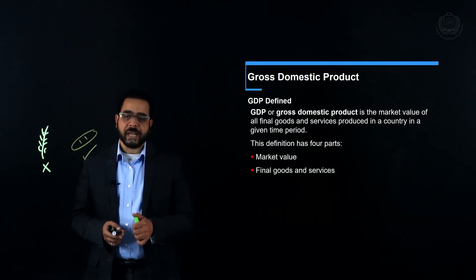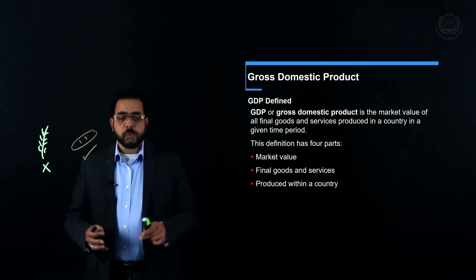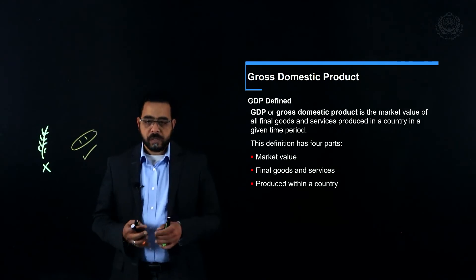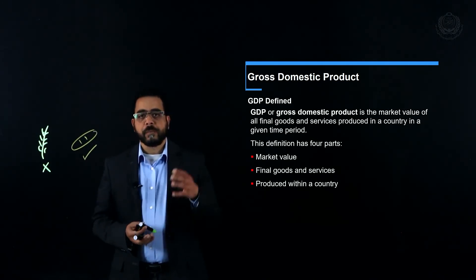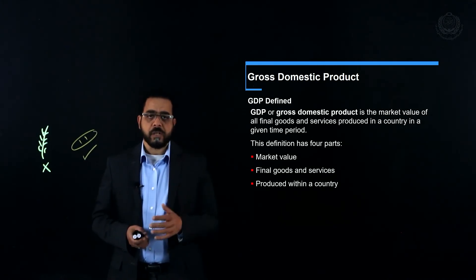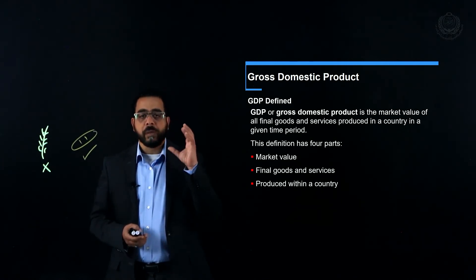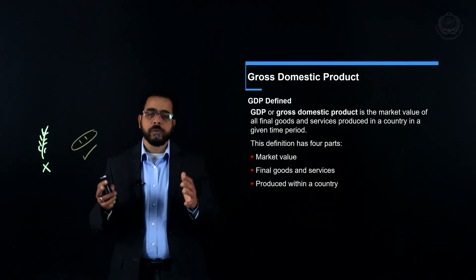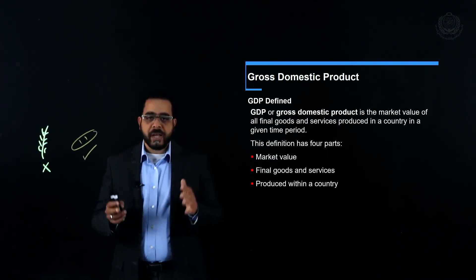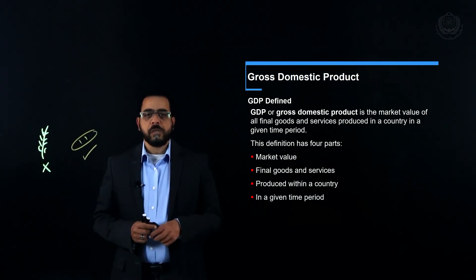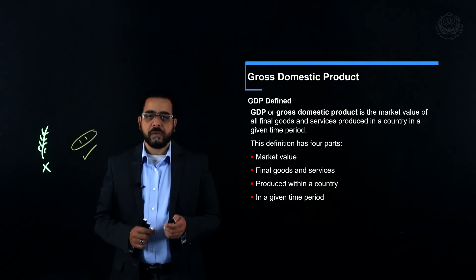Wheat is excluded because it is an intermediate good, and GDP takes into consideration final goods only to avoid double counting. Third, it is produced within a country regardless of the nationality of the producer. So if a French businessman starts a factory in Egypt, the production of that factory is part of Egyptian GDP. Likewise, an Egyptian-owned factory in France is included in the French GDP. Fourth, in a given time period — GDP is usually calculated quarterly, every three months, or annually, by the end of the year.